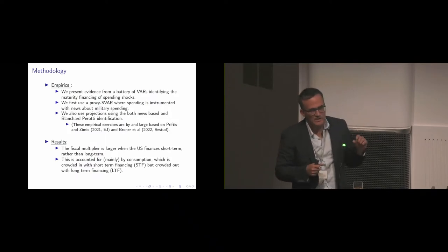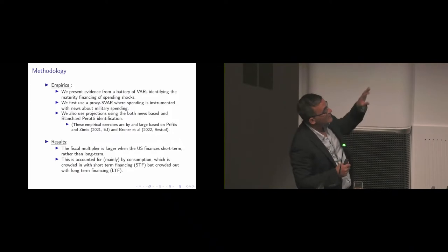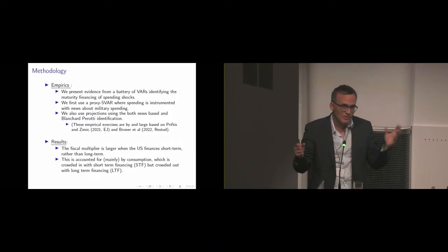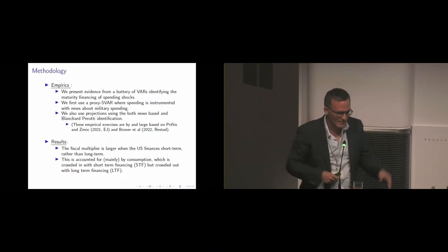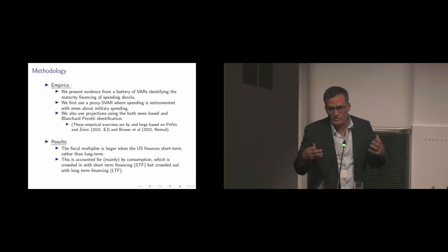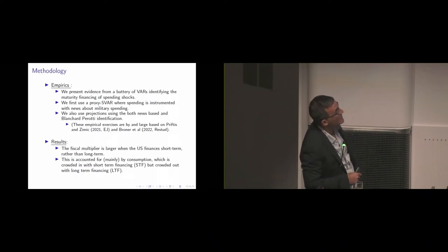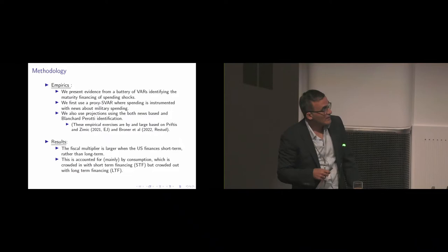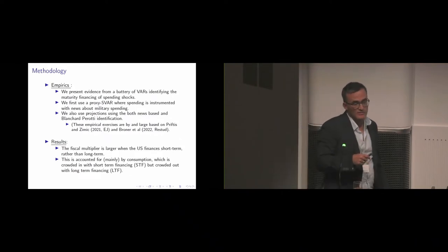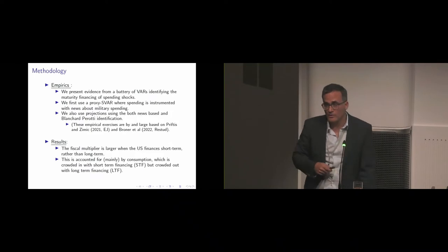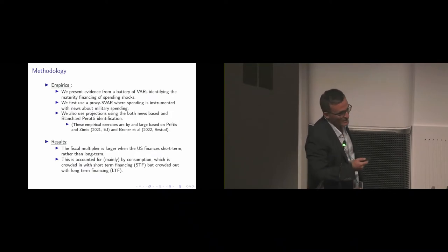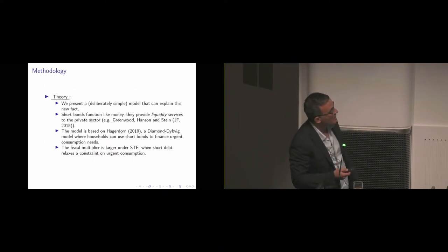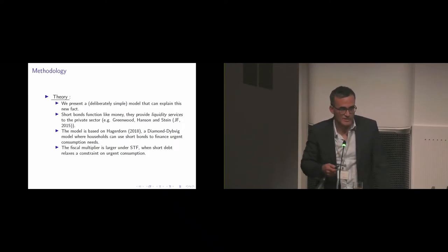Mostly I will be focusing on the proxy VAR, which is basically what Romanos did in his paper. We treat this as a baseline. I will show you that the fiscal multiplier is larger when the U.S. government has financed that short-term, and that this is accounted for mostly by consumption. So consumption seems to be the robust margin.